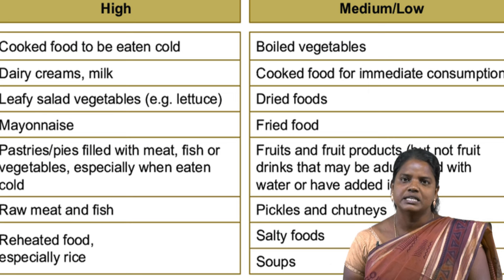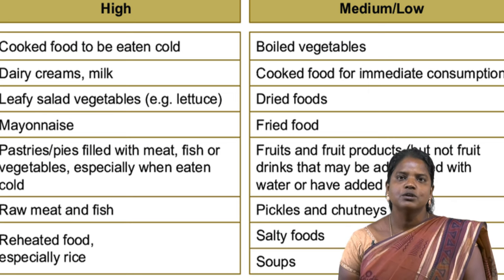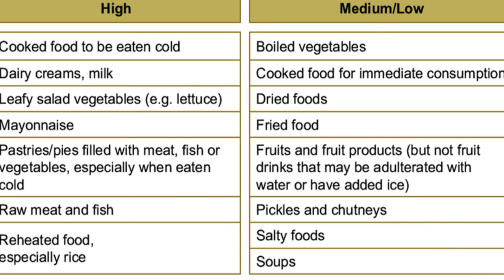High-level foodborne illness is spread to human beings through: cooked food eaten cold, dairy creams and milk, leafy salad vegetables, pasteurized pies filled with meat, fish or vegetables especially when eaten cold, raw meat and fish, and reheated food especially rice. Medium or low level foodborne illness sources include: boiled vegetables, cooked food for immediate consumption, dried foods, fried foods, fruits and fruit products (but not fruit drinks that may be adulterated with water), pickles and chutneys, and salty foods and soups.